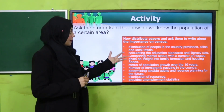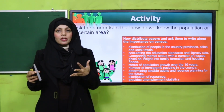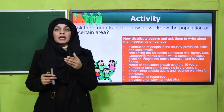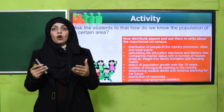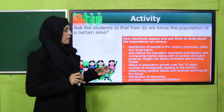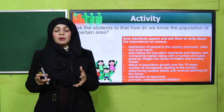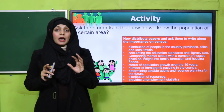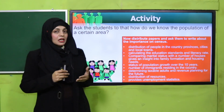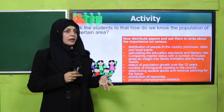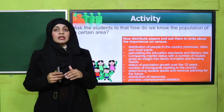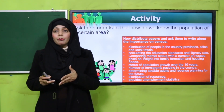Census se hume pata chalta hai: kis jaga pe, kis country mein, kis city mein, kis province mein kitni abadi hai, aur kis jaga per kitni ziada ya kitni kam abadi hai. Iske ilawa census se hume pata chalta hai ke logon ka marital status kya hai — whether they are married or unmarried, how many children they have, what age group they belong to.